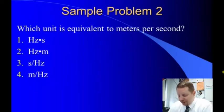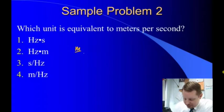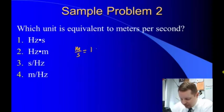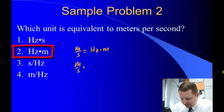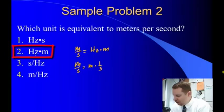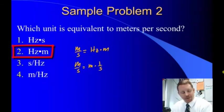What unit is equivalent to meters per second? Well, one over second is a hertz, so that must be a hertz times a meter, because a meter per second is one meter times one over seconds. Therefore, the correct answer must be two hertz times a meter.